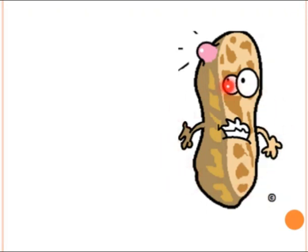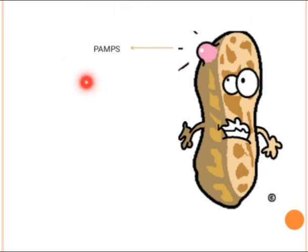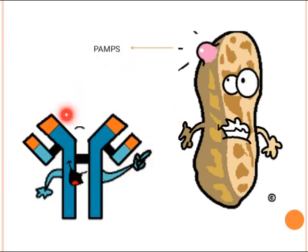Microbes contain specific structures known as PAMPs — pathogen-associated molecular patterns — which indicate the presence of a foreign particle. PAMPs include flagella, LPS, and double-stranded RNA in the case of viruses. These PAMPs are recognized by immune system receptors such as TLR and RIG receptors, signaling that a foreign microbe must be eliminated.